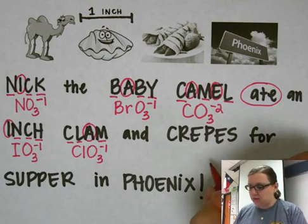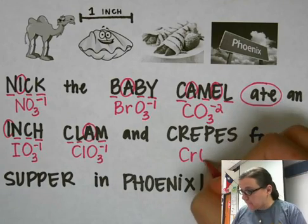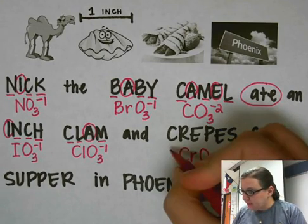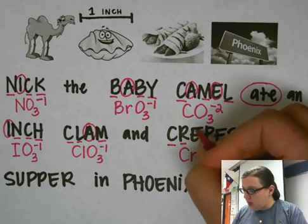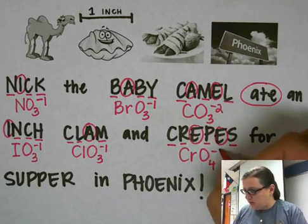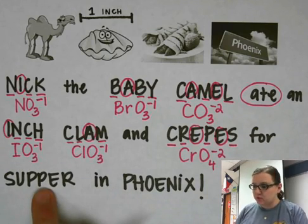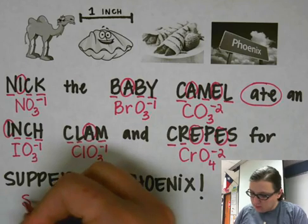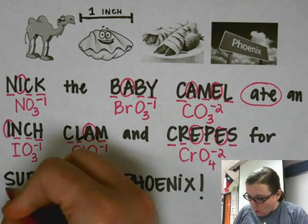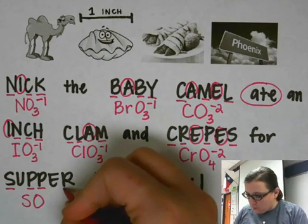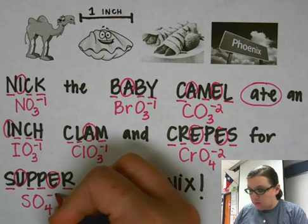'Crepes' is for chromate — chromate has chromium in it with oxygen. We have four consonants, so four oxygens, and two vowels for a negative two charge. 'Supper' is for sulfate — S and O, sulfur and oxygen. We have four consonants, so four oxygens, and two vowels, so negative two.